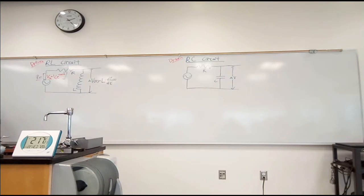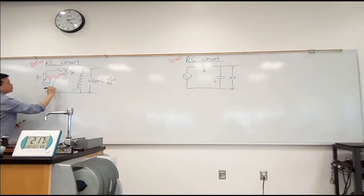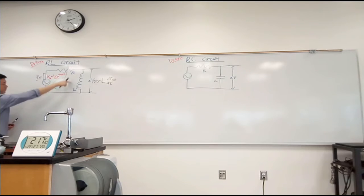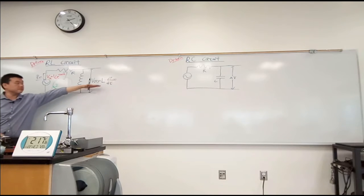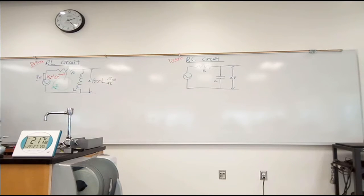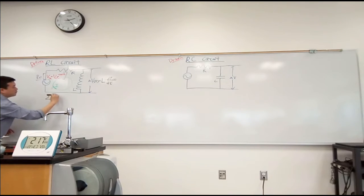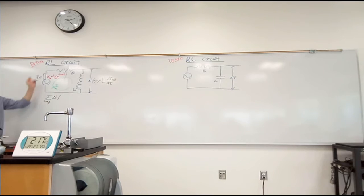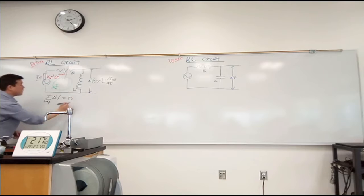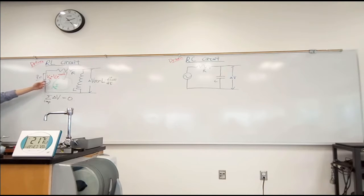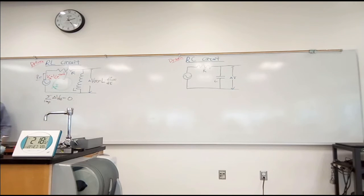It does come down to the same thing we do every single time. We consider this loop, say there's a current flowing around this way, apply Kirchhoff's rule to find the value of the current, and then once I have that, this is a single-step thing. So let me write down Kirchhoff's loop rule. The loop rule says that when you add up all the voltage changes as you go around the loop, it should add up to zero. And this time, you have a time-dependent voltage applied, but that doesn't change Kirchhoff's rule. This is a general circuit-solving method, equally applicable when everything is time-dependent as when it was just DC.